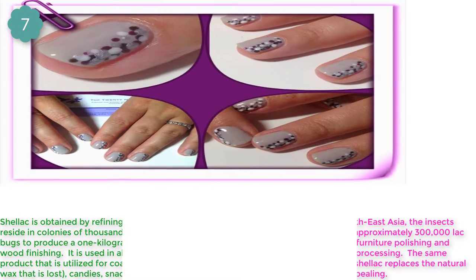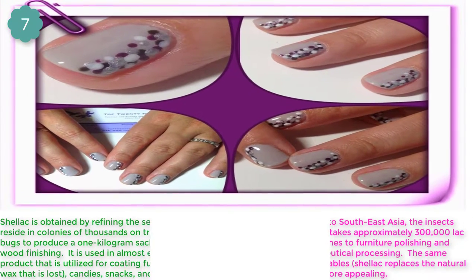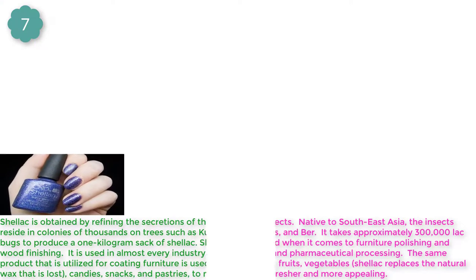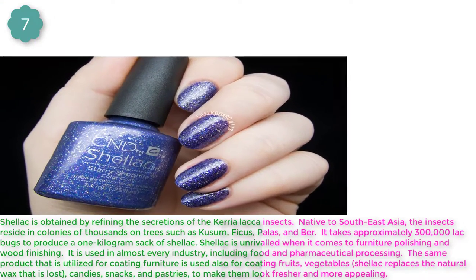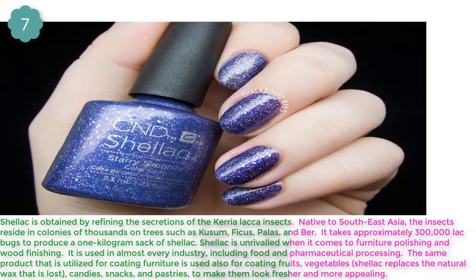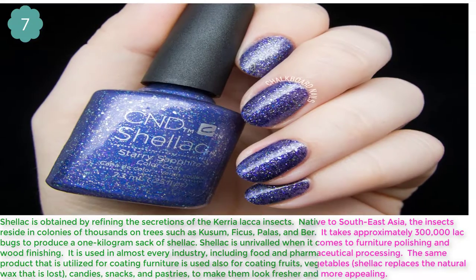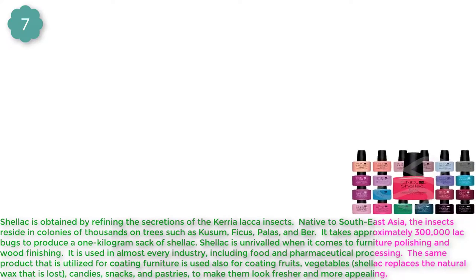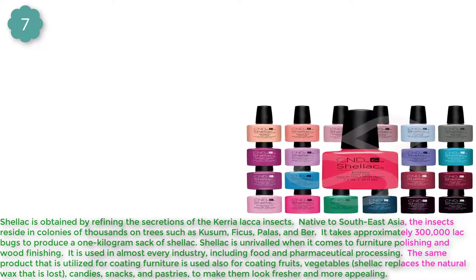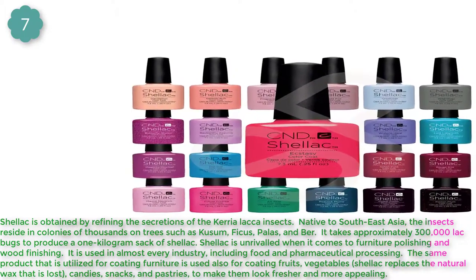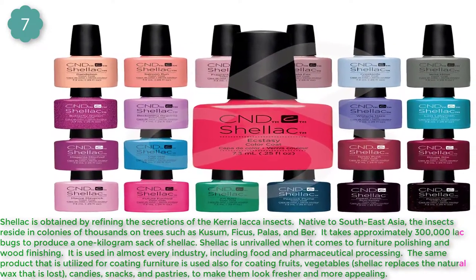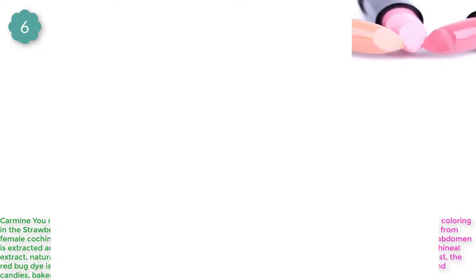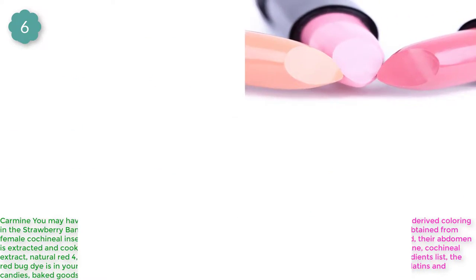Number 7: Shellac. Shellac is obtained by refining the secretions of the Kerria lacca insects, native to Southeast Asia. The insects reside in colonies of thousands on trees such as kusum, Ficus, and others.